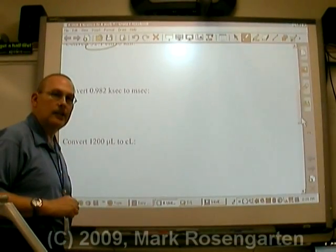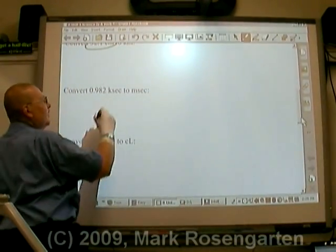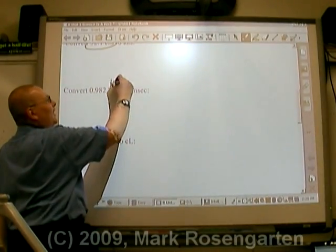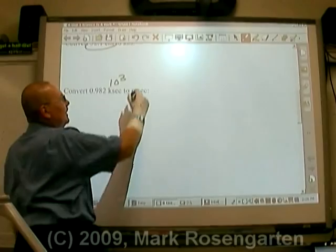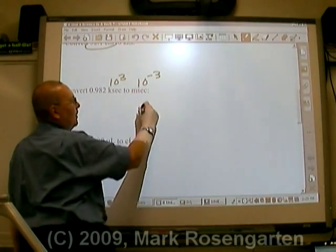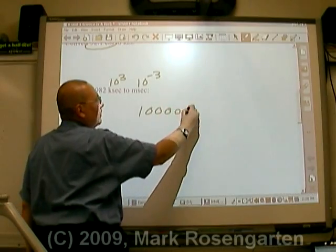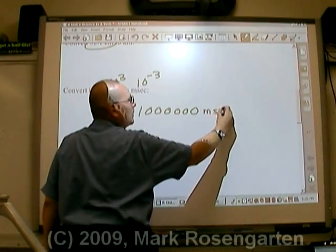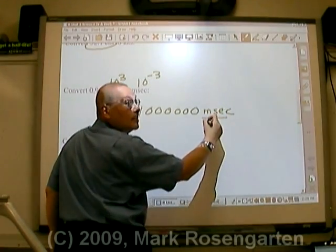Just for fun, let's try one more. I know, it's really fun, isn't it? Woo-hoo! Conversion! Kilo, 10 to the third. Milli, 10 to the negative third. Six powers of 10 difference. Milliseconds is smaller. Kiloseconds is larger.